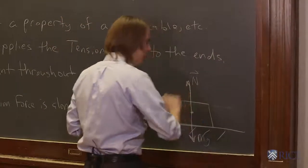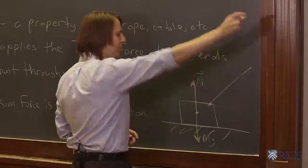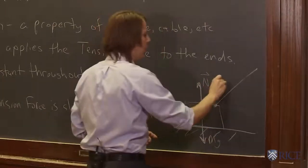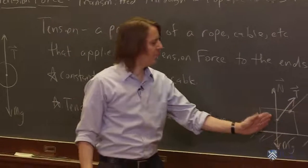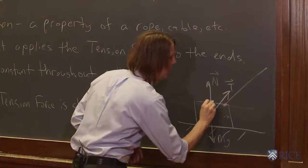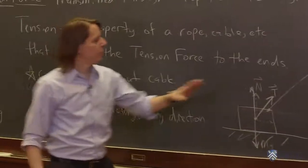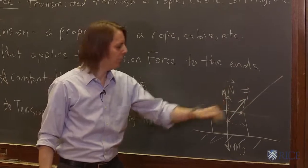So in this case, if the rope is at an angle, right, so here's the rope, and here's my hand pulling the rope, then the tension force, which I'll draw at the center, is also at that same angle. So the tension has a component up, and a component this way. So I can draw the tension component horizontal, and the tension component vertical. So the tension doesn't go normal to the surface. It goes along the direction of the rope, or the cable.